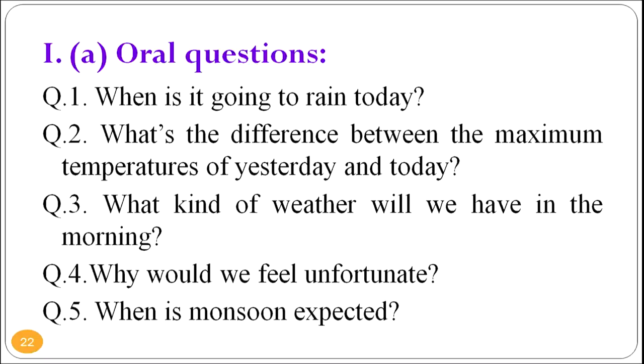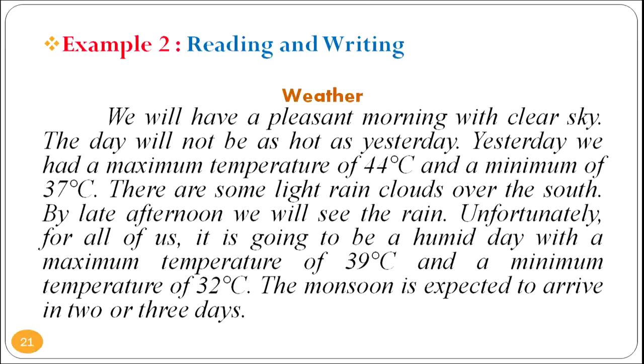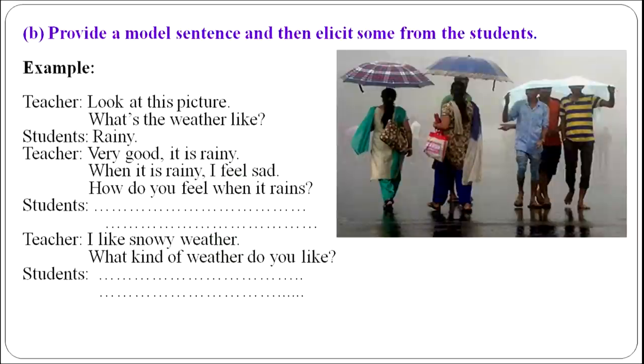You can ask oral questions based on that: When is it going to rain today? What is the difference between the maximum temperatures of yesterday and today? What kind of weather will we have in the morning? Why would we feel unfortunate? When is the monsoon expected? You can also provide a model sentence and elicit responses from students. For example: 'Look at this picture — what's the weather like?' Students reply: 'Rainy.' Teacher: 'Very good, it is rainy. When it is rainy, I feel sad. How do you feel when it rains?' Students reply. 'I like snowy weather — what kind of weather do you like?' Students must understand and reply.